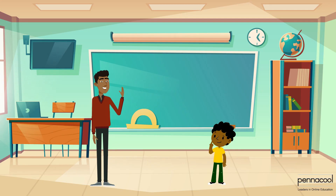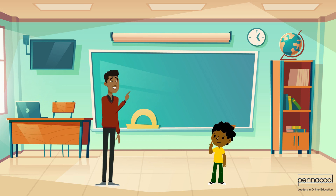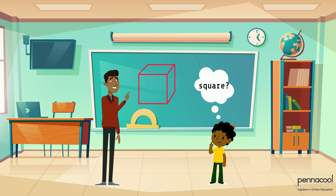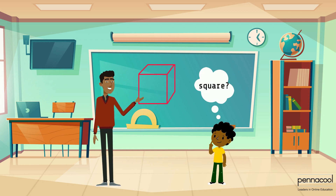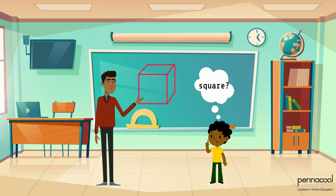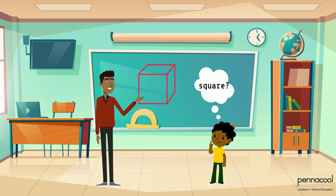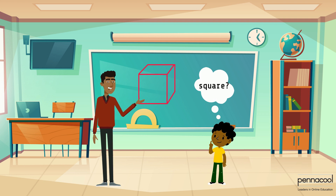Tom is in school and his teacher shows him a solid. He calls it a square, but the teacher explains to him that a square only has two dimensions and therefore cannot be a solid. Solids are three-dimensional. But what does this mean?